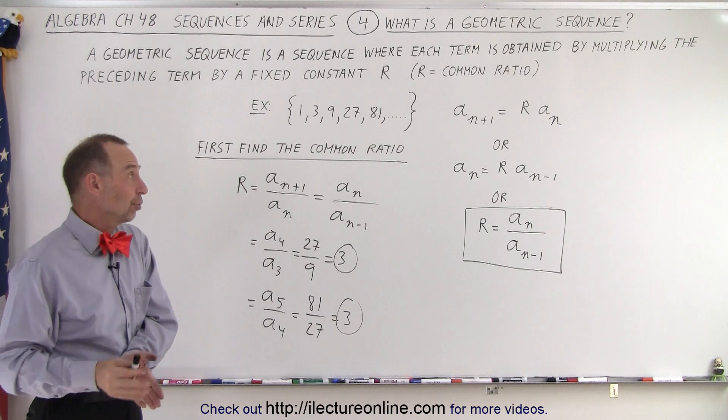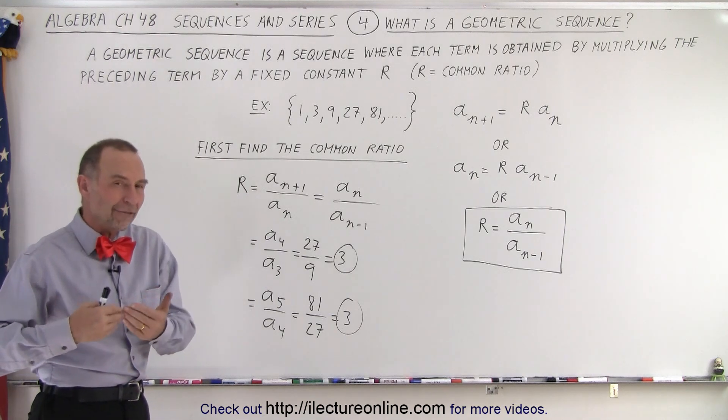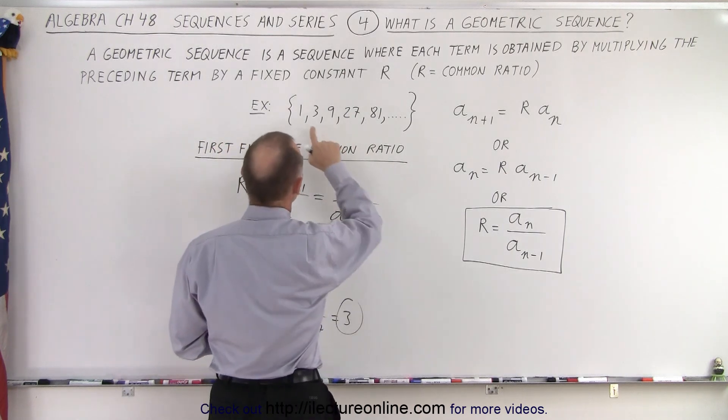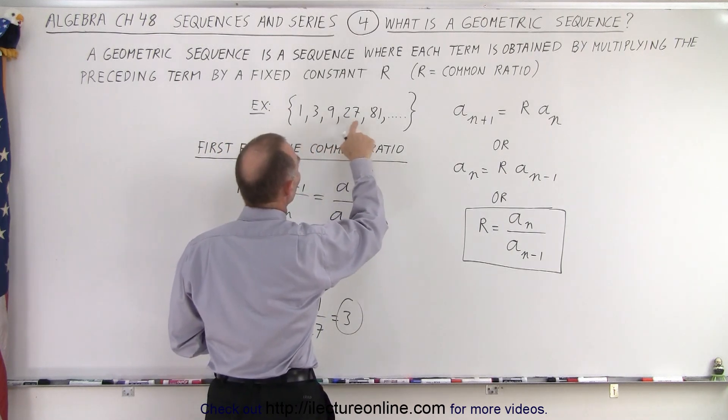Once you know what the common ratio is, you can now find the next term. For example, what's the next term after this? Well, here we can see that this is the fifth term. We now want to get the sixth term.